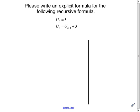We're going to take a moment to look at the relationship between explicit formulas and recursive formulas. We're asked to write an explicit formula for the following recursive formula. That recursive formula starts with u sub 0 equals 5, which is the initial value, the starting value.